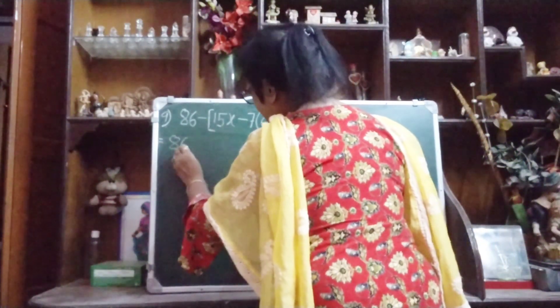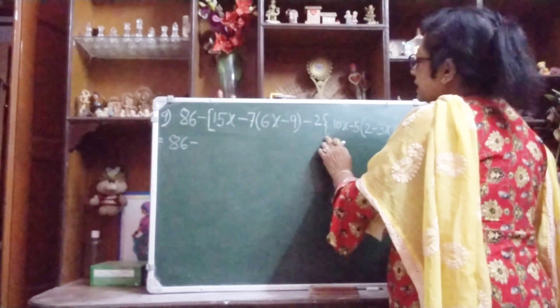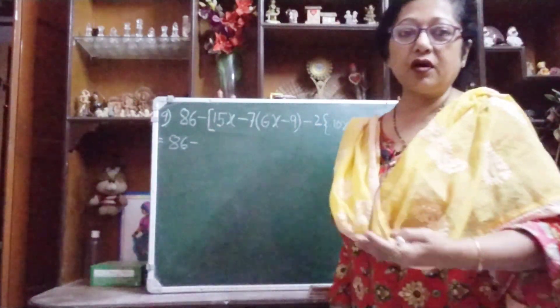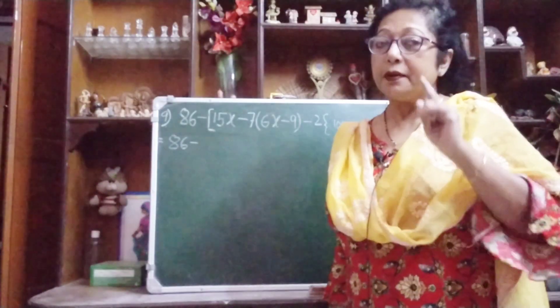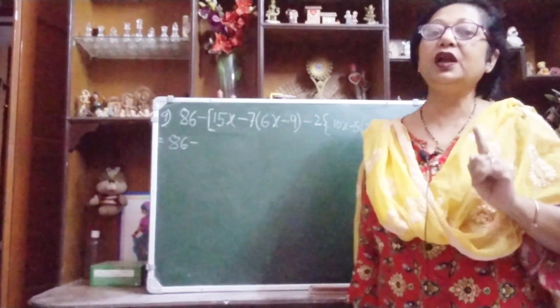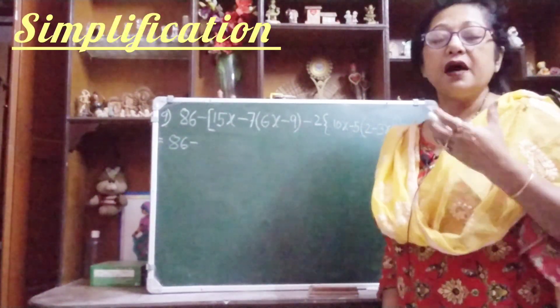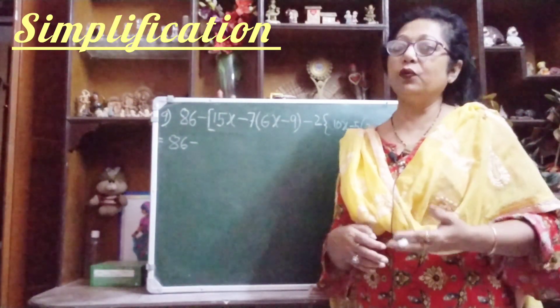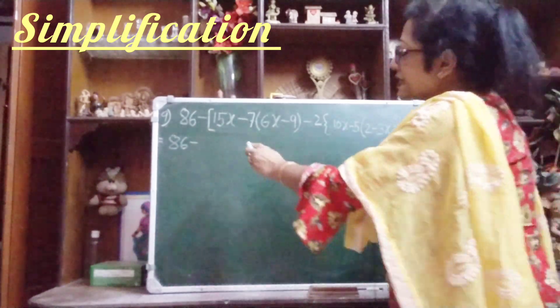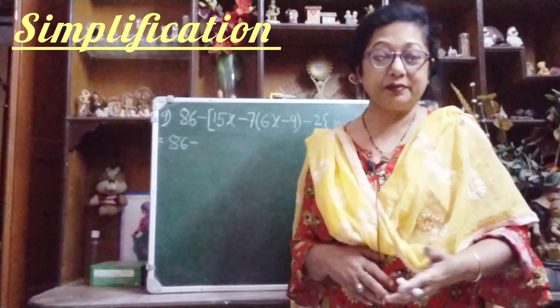86 as it is you write. Here three brackets are there. This is the first bracket or small bracket, this is called curly bracket or second bracket, and this is square bracket or big bracket or third bracket. First you will do the work of the small bracket, then we work for the curly bracket, and last we work on the big bracket or square bracket.